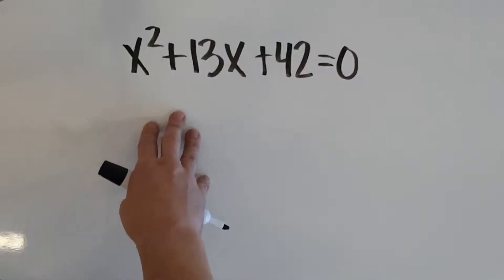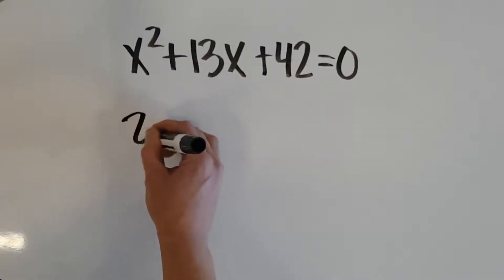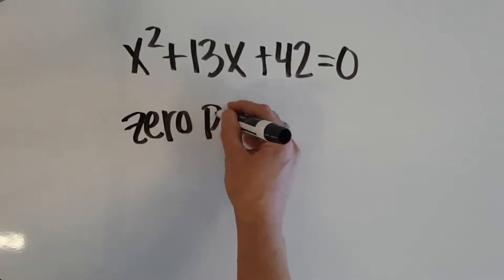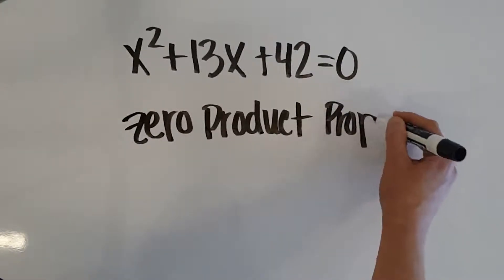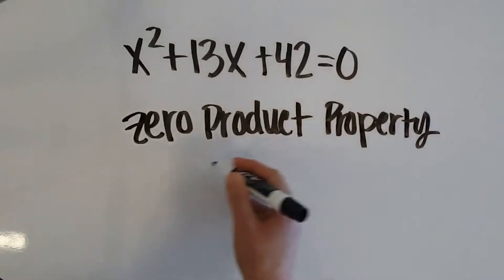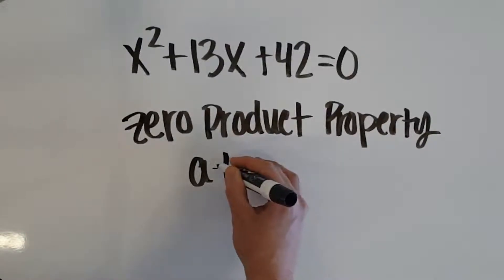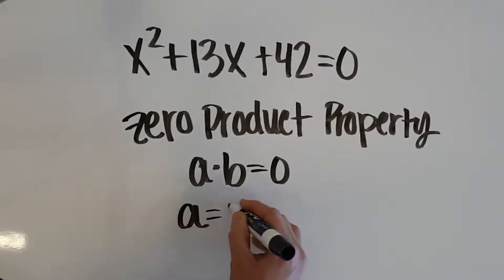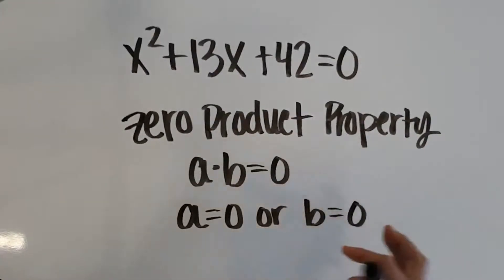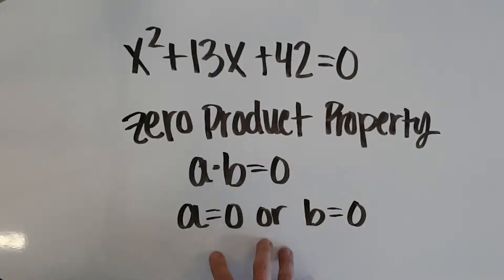So before we actually try to solve this equation, we have to talk about something called the zero product property. So the zero product property says that if I take two factors, a and b, doesn't matter what they are, and I multiply them together to get 0, the only way for this to be a true statement is if a is equal to 0 or b is equal to 0. So there are two possible combinations that would give us a product of 0.